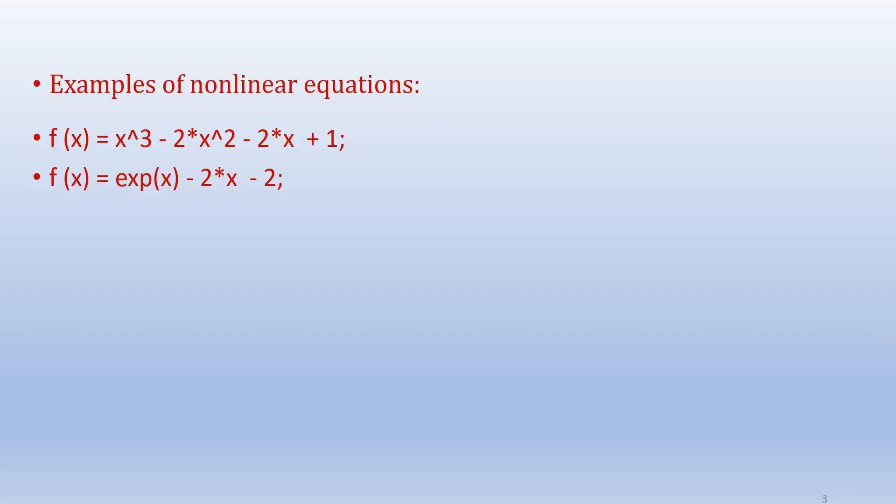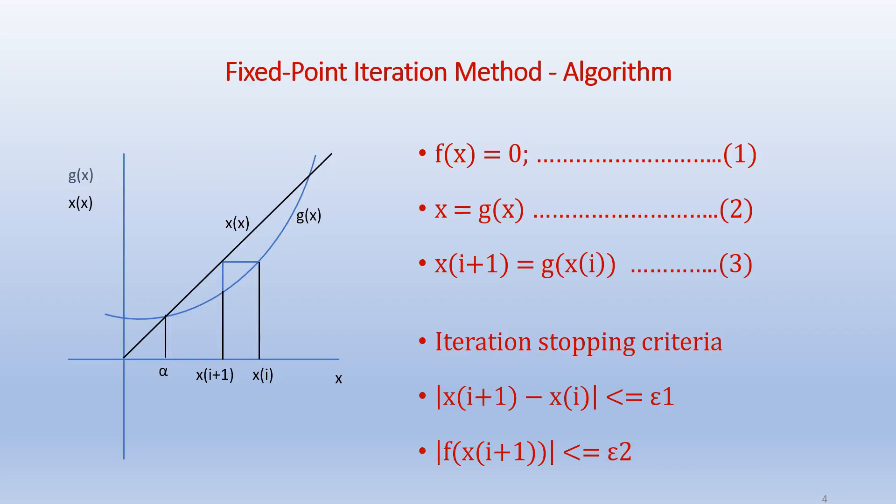The Fixed-Point Iteration Method algorithm is given below. Our objective is to solve for the root of the equation f(x) = 0. The first step in this method is we need to arrange the equation f(x) = 0 in the form x = g(x) as shown in equation 2.